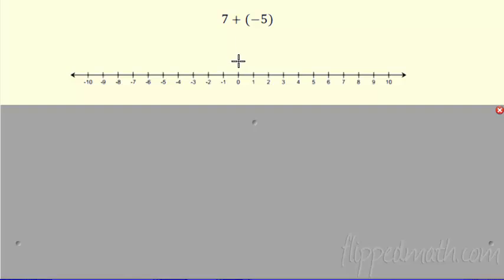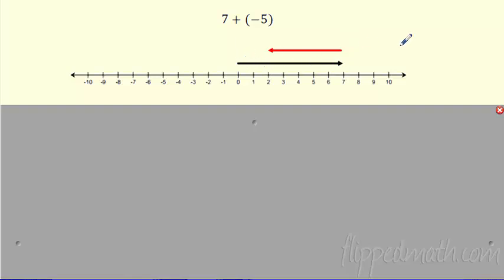To model this: how do I model seven? We start at zero and I'm going to go to the right seven — there is seven. Then what am I going to do? I'm going to add negative five, so I'm going to add that in the negative direction. I start where I was at seven and go one, two, three, four, five in this direction. So I went seven to the right, then went negative five back to the left — where'd I end up? I ended up back at two. So seven plus negative five is two. You can see I actually did subtraction by adding — it's like seven minus five.